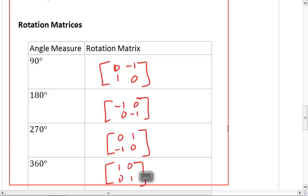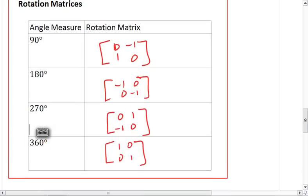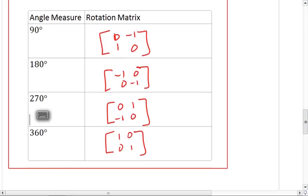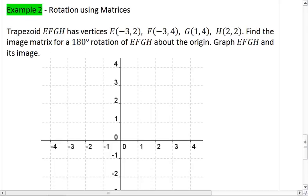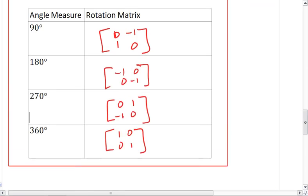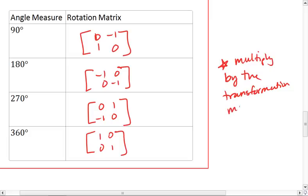So take a moment, write these down. Make sure you have these rotation matrices in your notes. It's very important. Once you have these down and once you're ready, you can go on to example 2, which is rotations using these matrices. One thing to remember, though, is just like with our reflection, we always multiply by the transformation matrix first. And you'll see what I mean by that in this first example.